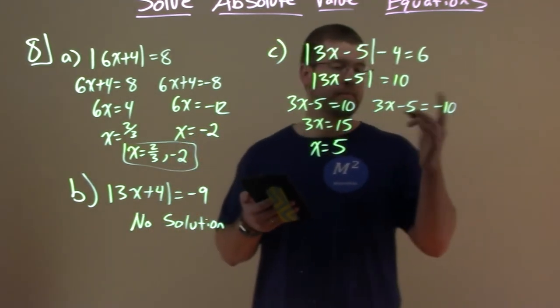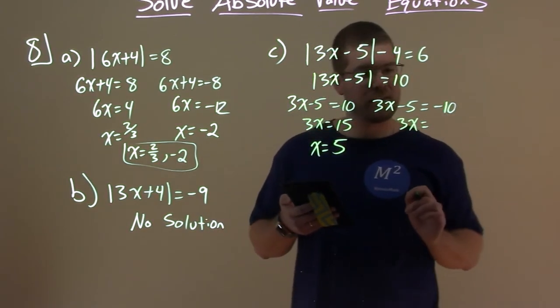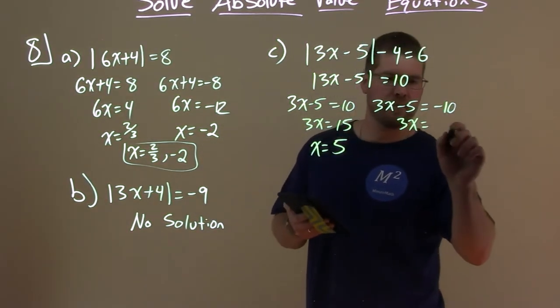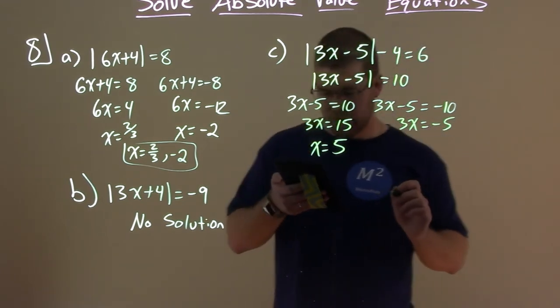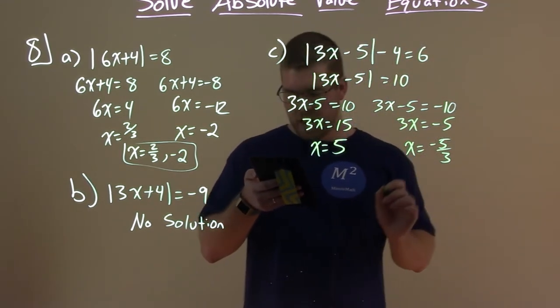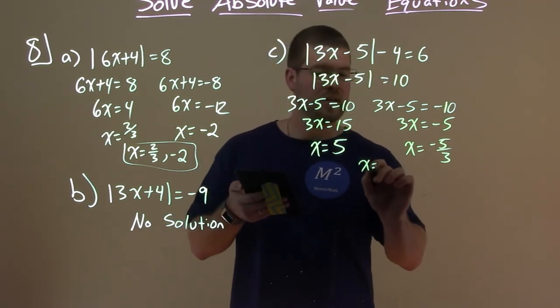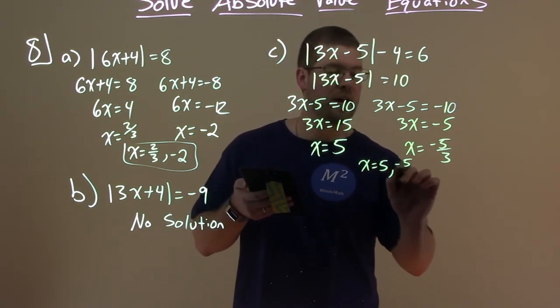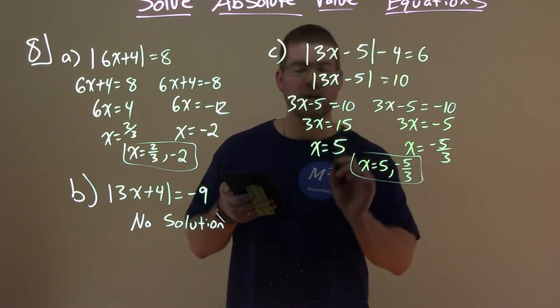Keep going. Add 5 to both sides. 3x equals negative 10 plus 5, which is negative 5. Divide by 3, and we got x equals negative 5 thirds. And so our two solutions are x equals 5 and negative 5 thirds.